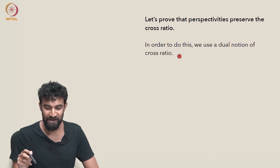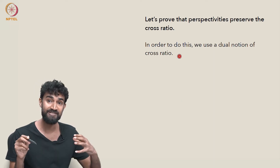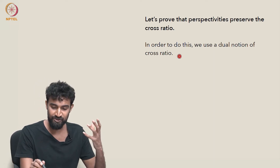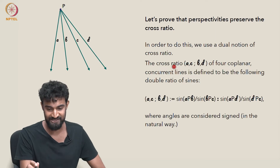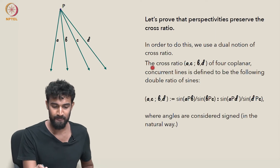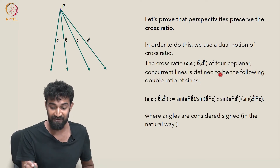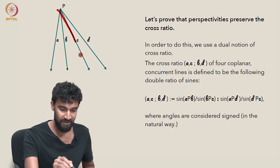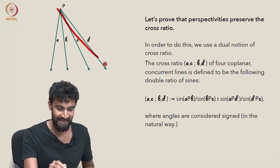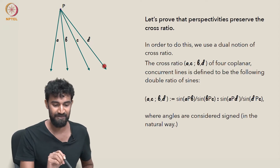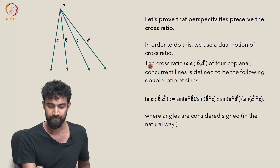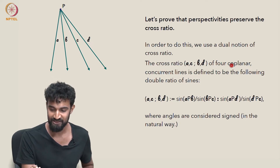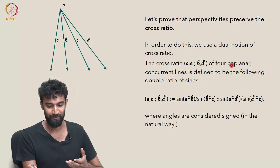Up till now we've been working with a cross-ratio of points. I want to also introduce a cross-ratio of lines. In particular, if we have four concurrent coplanar lines A, B, C, and D, I want to define a cross-ratio of lines in the following way.